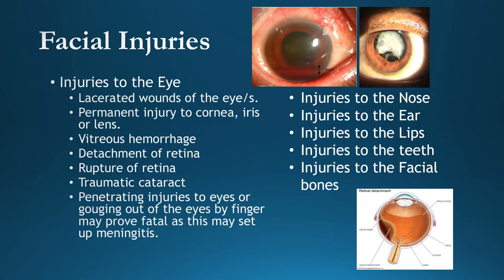Under facial injuries, we consider injuries to eyes, nose, ears, lips, teeth, and facial bones. For eyes: lacerated wounds can occur across or inside the eye; permanent injury to cornea, iris, or lens causes blindness. Vitreous humor bleeding can be observed. Detachment of retina occurs when the retinal layer detaches from the choroid or scleral layer. Rupture of retina and traumatic cataract — where the lens is damaged by trauma — can also be seen.